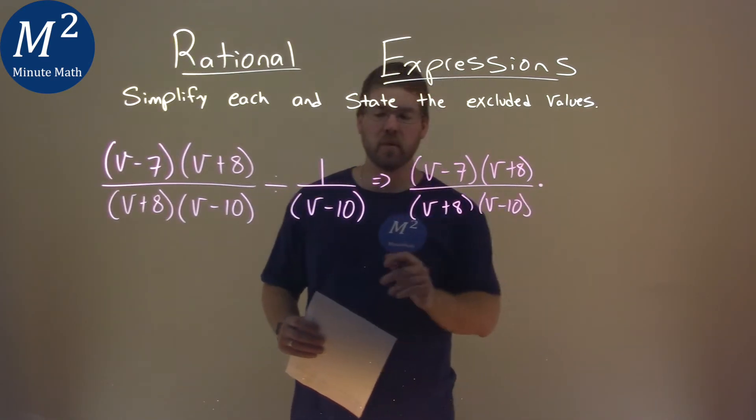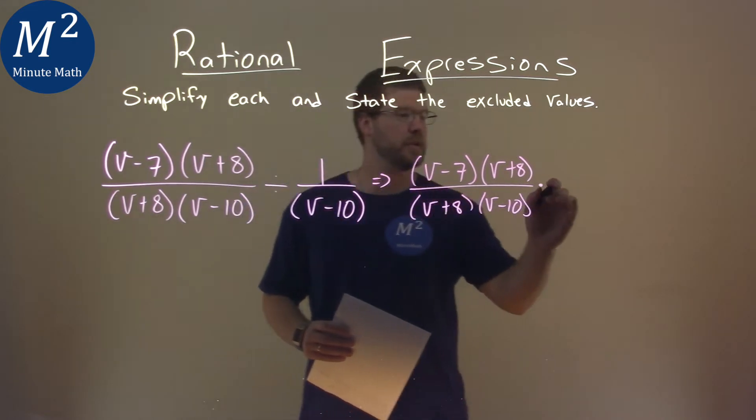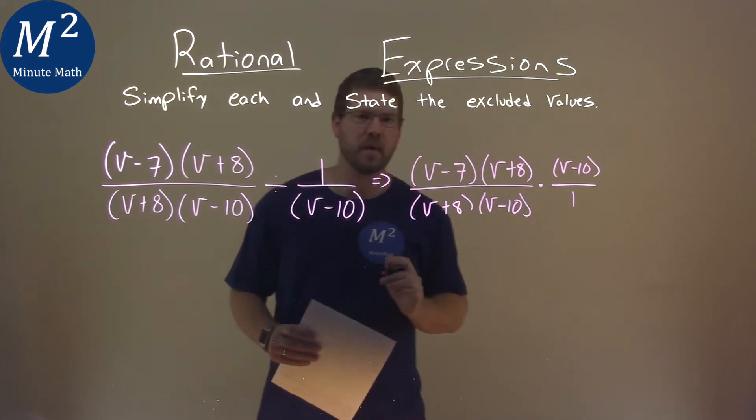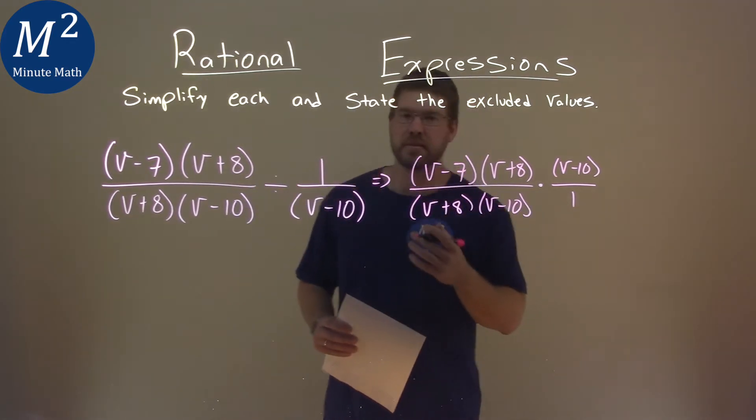But this is the same as being multiplied by, we flip the fraction here, and now we have a v minus 10 over 1. And this actually makes it a little easier to see.